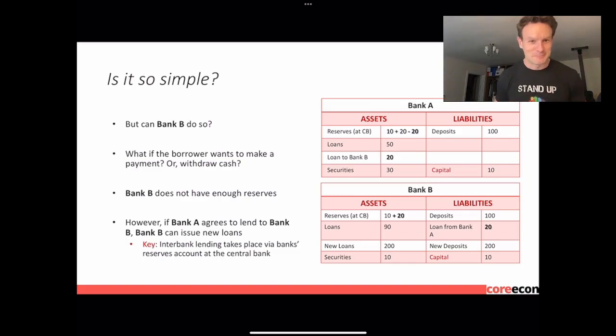Is it so simple? Can Bank B do that? Well, depends. What if the borrower wants to make a payment or withdraw cash? Bank B doesn't have enough reserves to facilitate that withdrawal of the cash. But if Bank A agrees to lend Bank B some money, then Bank B can issue new loans. What you want to think of here is that what's going to happen here is that there's going to be what we call interbank lending. So the rural bank lends to the urban bank. That's interbank lending.